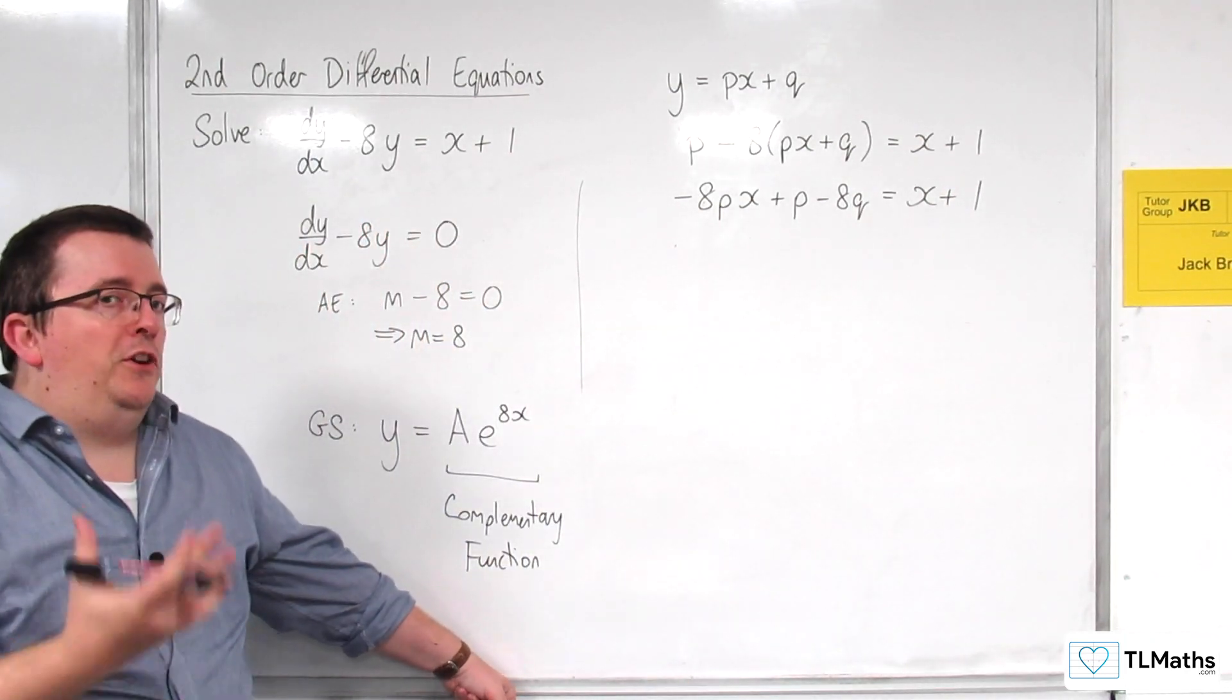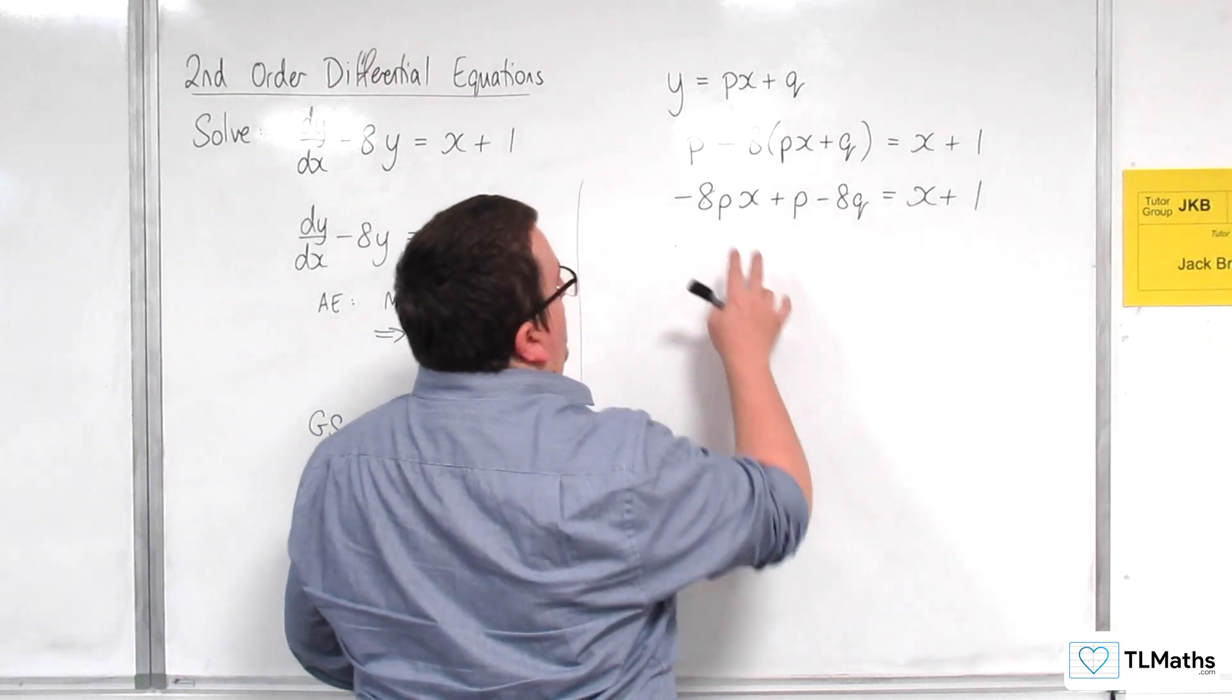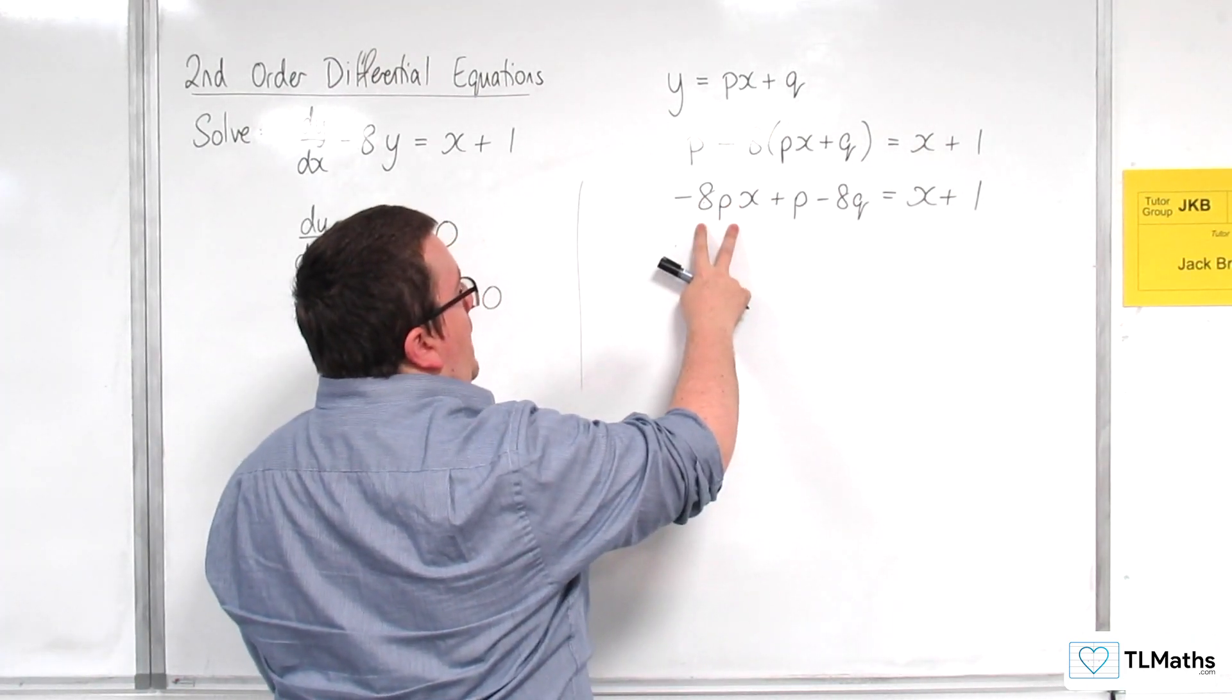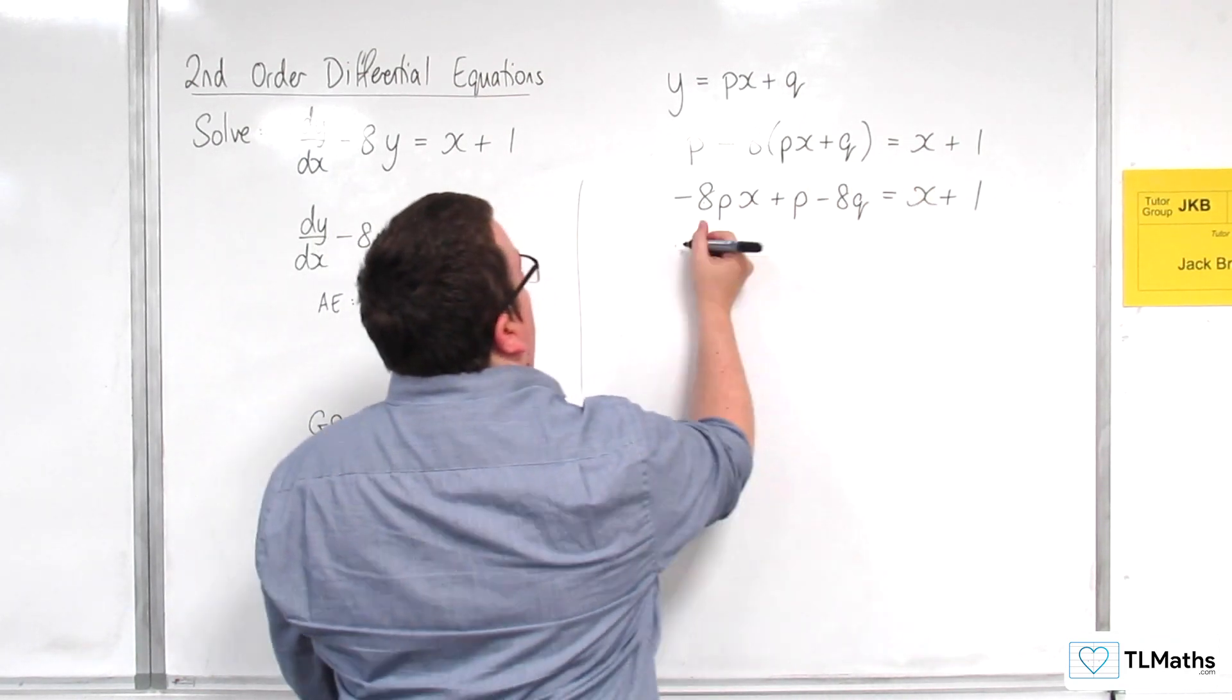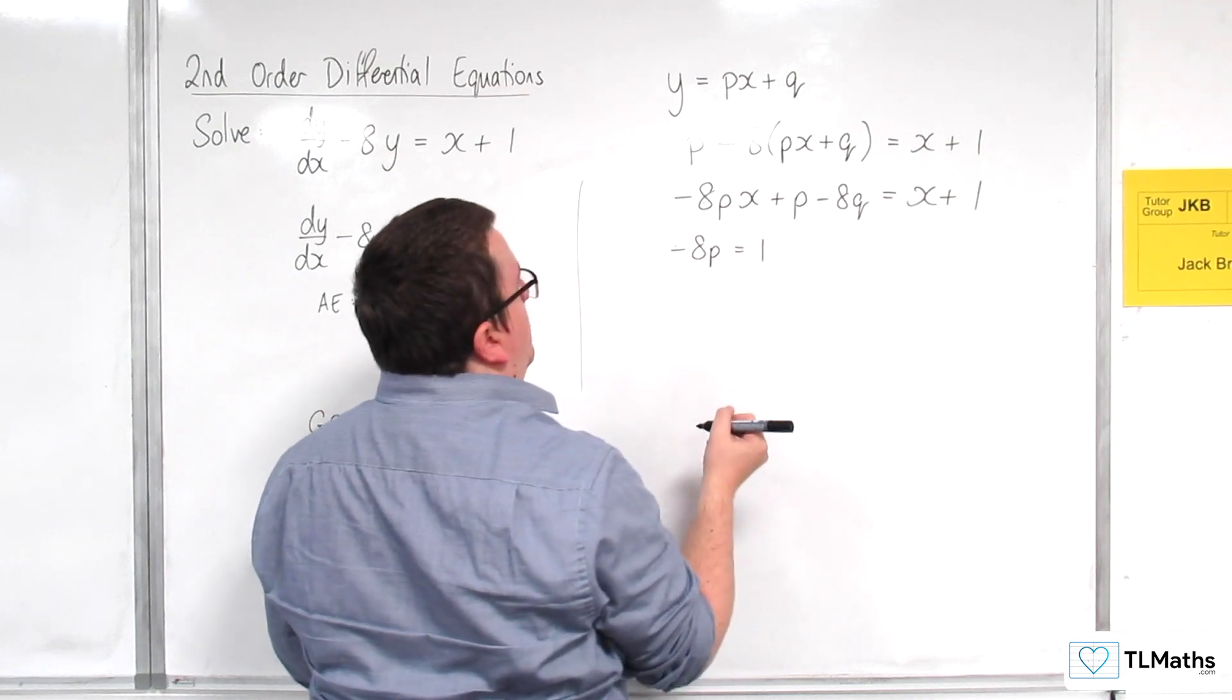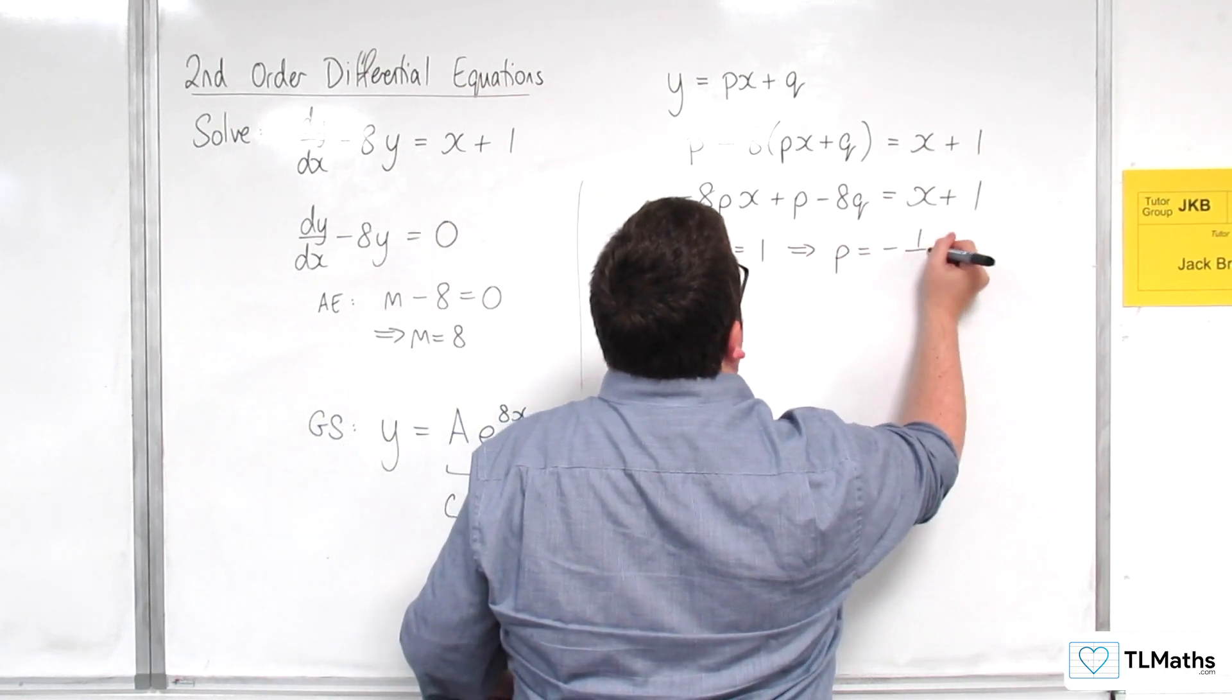Now, the left-hand side has got to be the same as the right-hand side. So I'm going to compare coefficients here. So the value that's in front of the x, the coefficient of x, has got to be the same as the coefficient of x over here. So minus 8p has got to be equal to 1. So that implies that p has got to be equal to minus 1 eighth.